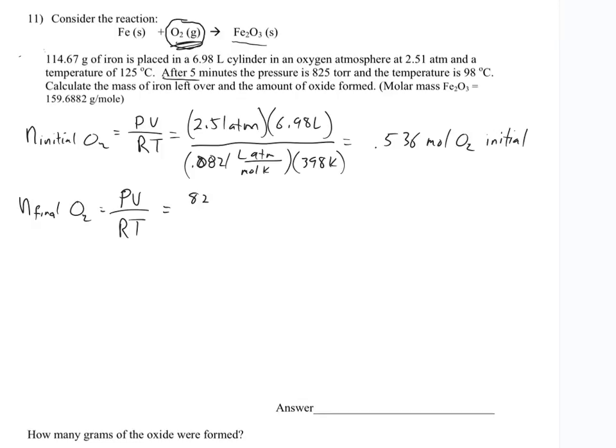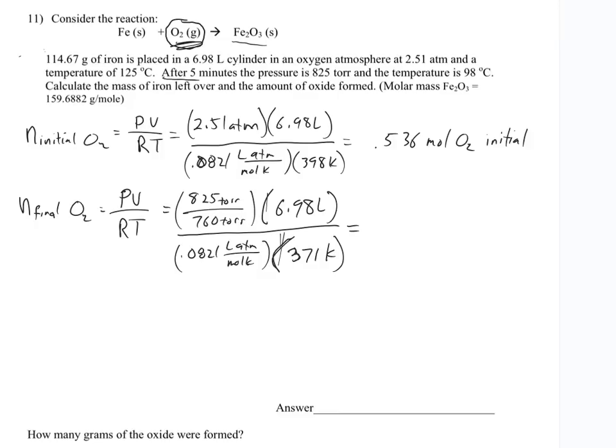That's 825 torr over 760 torr, I'll just leave it like that and put it in my calculator. It's the same volume, 6.98 liters, and the temperature has dropped to 371 Kelvin. So after this reaction has gone, after five minutes, I've got 0.249 moles of oxygen - that's final.